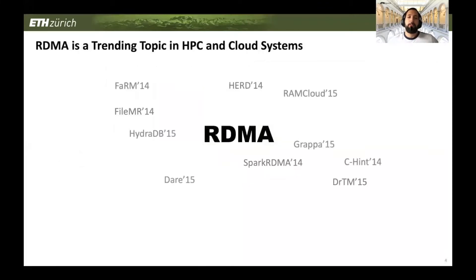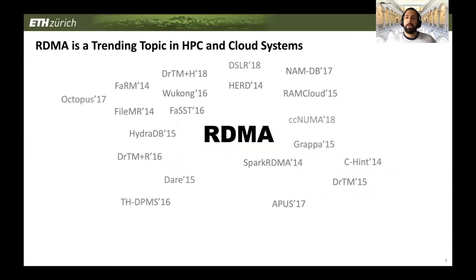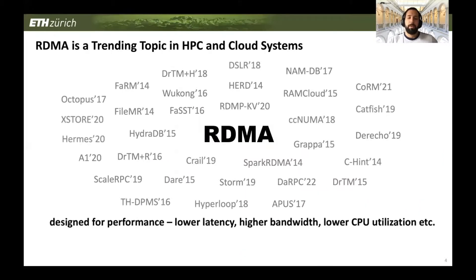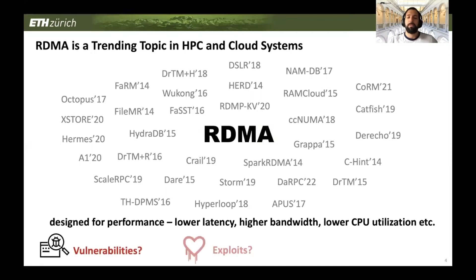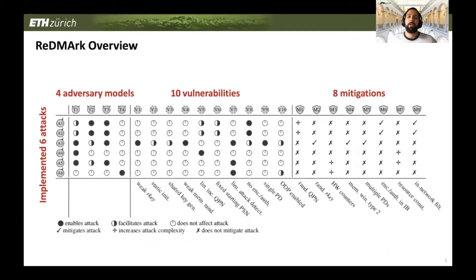RDMA has been a trending topic in HPC and cloud systems recently. It was designed for performance and provides lower latency, higher bandwidth, and lower CPU utilization. But what about vulnerabilities, exploits, and mitigations? In RedMark, we consider four different adversary models, found 10 different vulnerabilities, implemented six attacks using those vulnerabilities, and also provide mitigations that reduce attack impact or improve attack complexity.